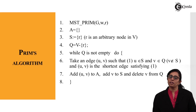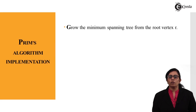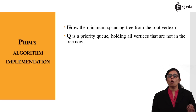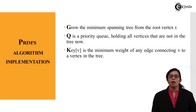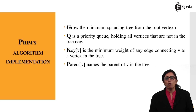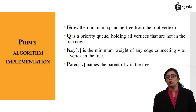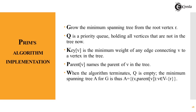If an edge forms a cycle, it will not be part of the spanning tree. As the tree grows from root R, Q is a priority queue holding all vertices not yet in the tree. The key value is the minimum weight of any edge connecting V to a vertex in the tree. As we move through the tree, the root parent keeps changing, and each time we must find the minimum edge from that root vertex. When the algorithm terminates, Q is empty.